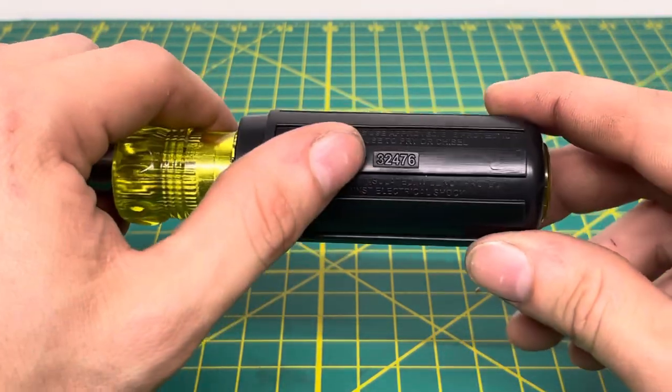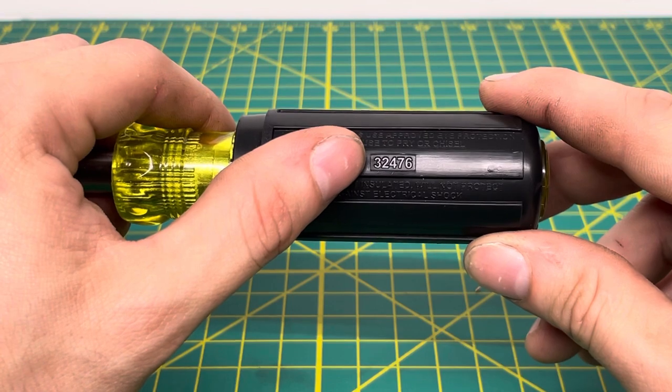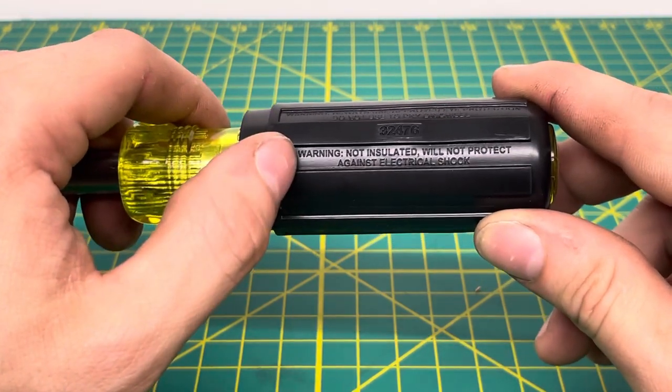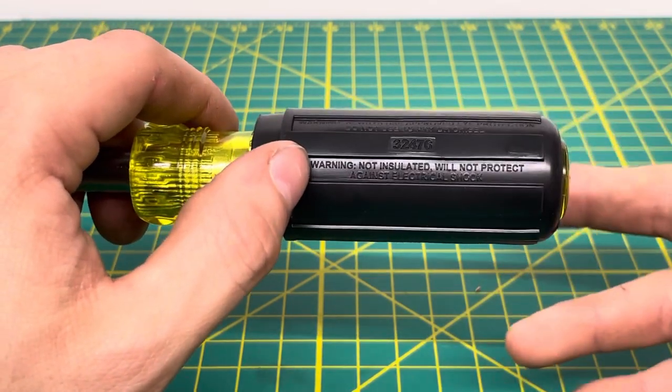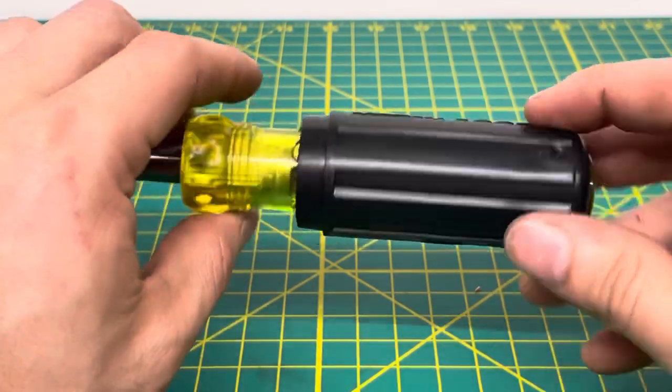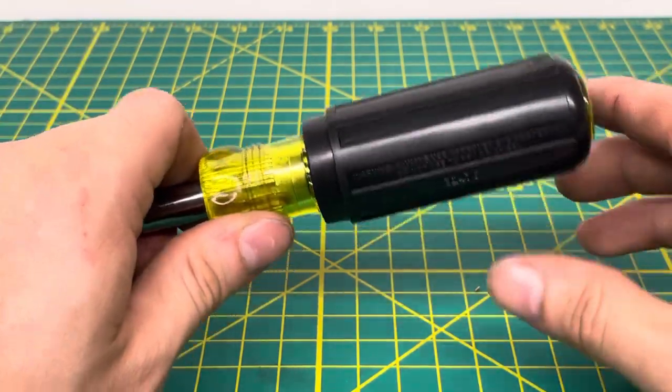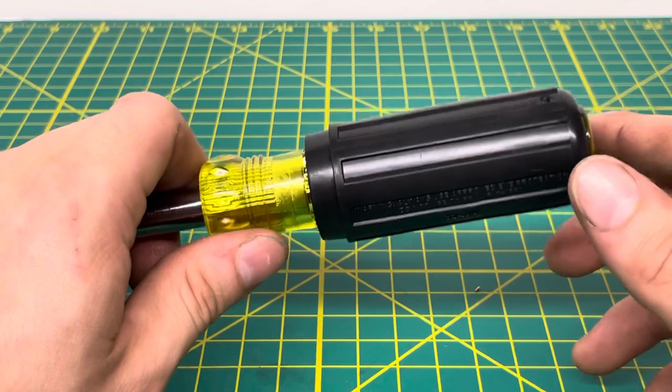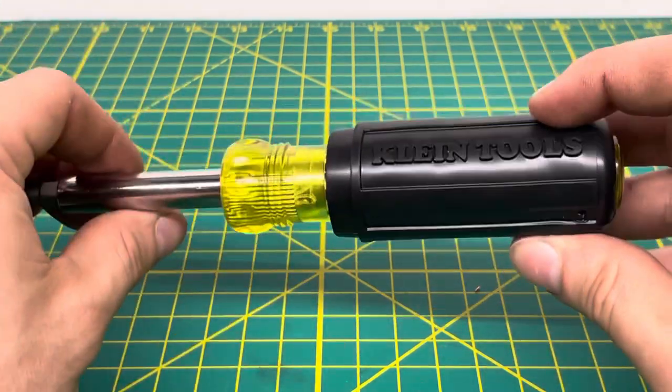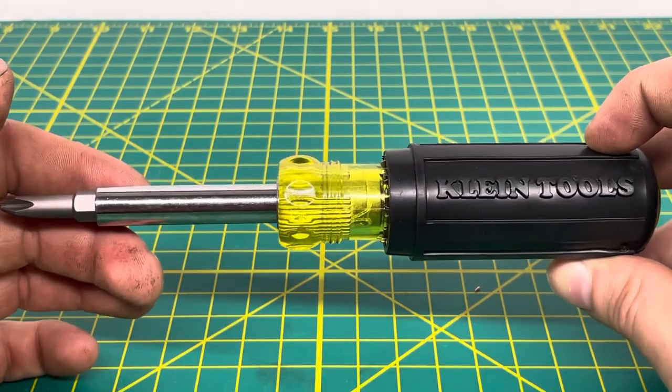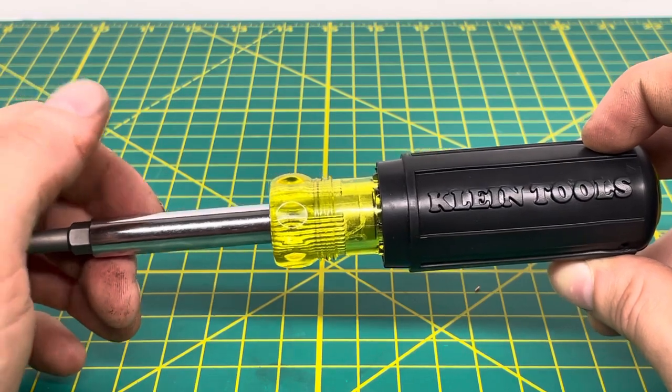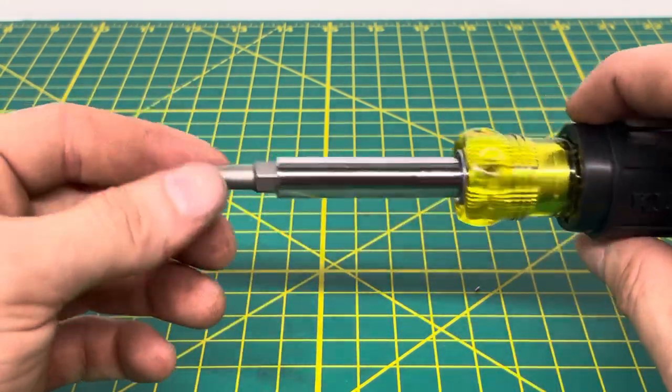You have your product number right there, which is 32476, and you have another warning down here. It's not insulated, it's not going to protect against electrical shocks, so don't go trying to use this on a live circuit or something that has the potential to come live while you're working on it because this is not going to protect you. You're going to destroy the tool and you are nine times out of ten going to get hurt yourself as well.